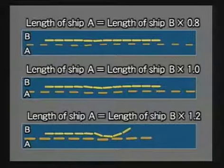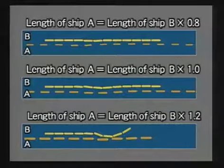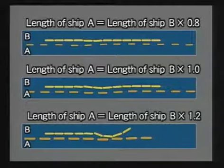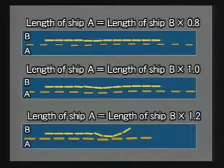As you can see in the results of the simulation, the interaction between the two ships is enhanced as the length of the overtaking ship increases. A collision occurs because the overtaken ship is pulled toward the overtaking ship by suction when the ratio of the lengths of the two ships ranges around 1.2.